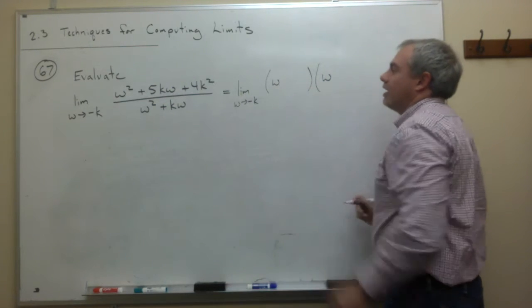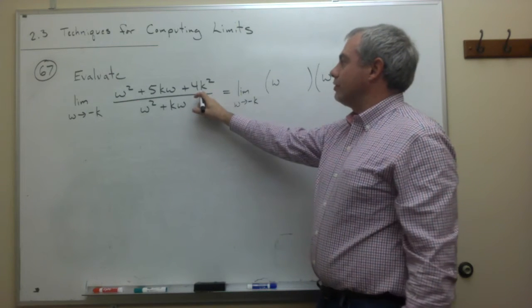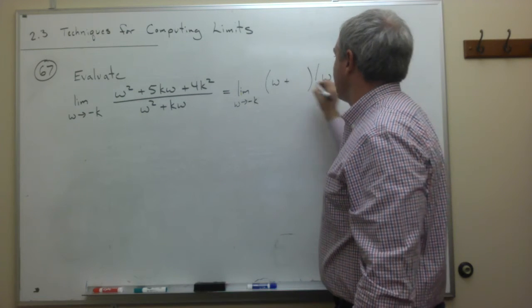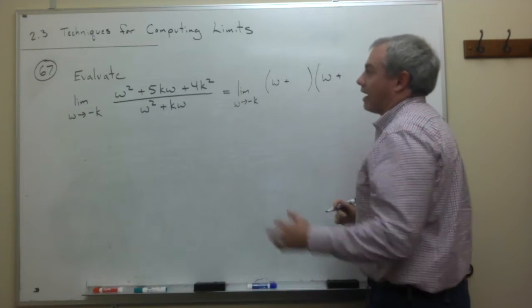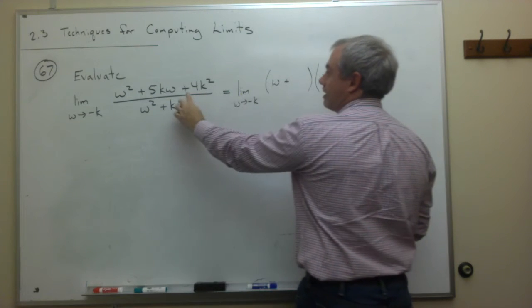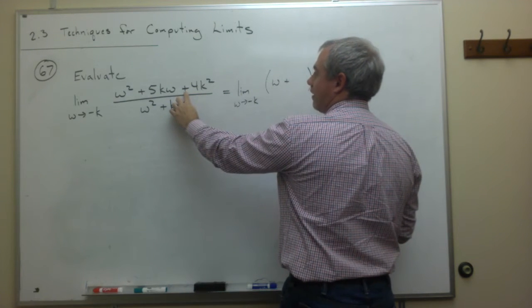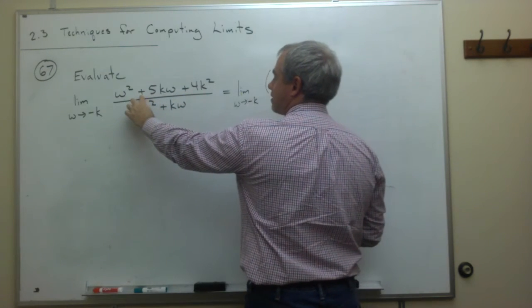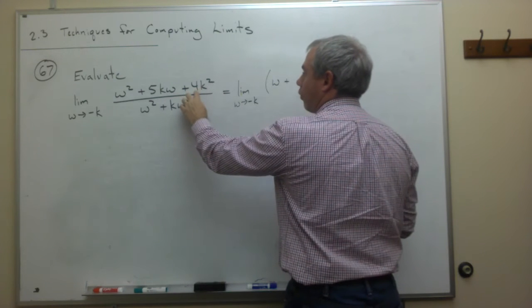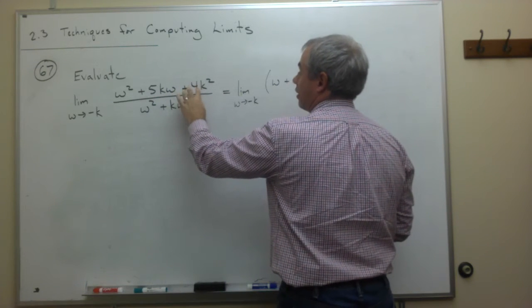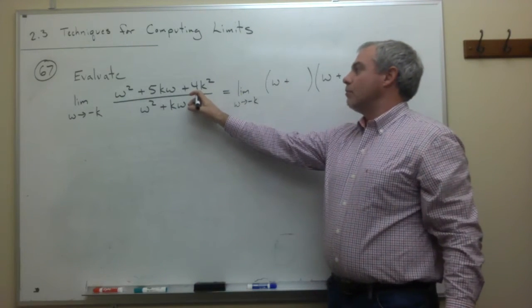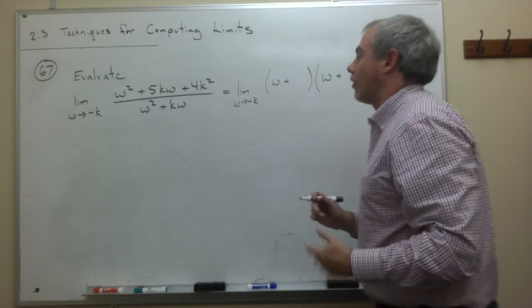So I've got a w and a w. And I know that they multiply to give me 4k squared. And I know that the two numbers that are going to go here are going to be the same because this is positive. So two positives, they're going to multiply to 4, and they're going to add to 5. So two numbers that multiply to 4 and add to 5 are 4 and 1.